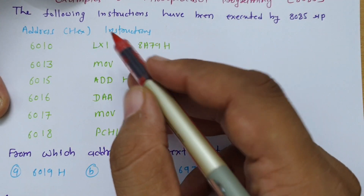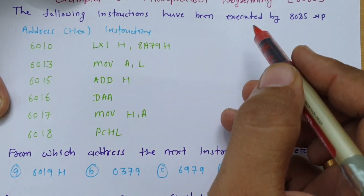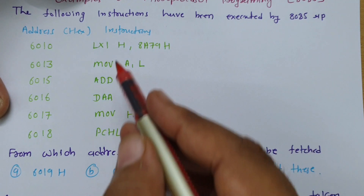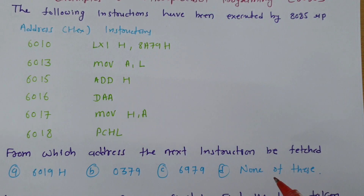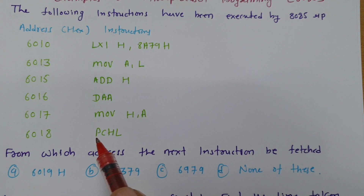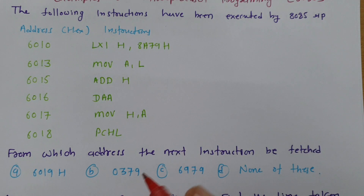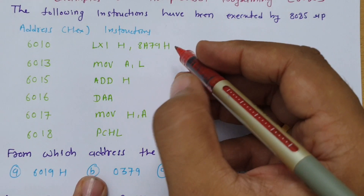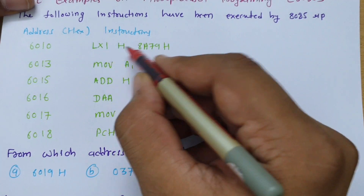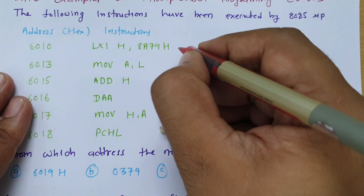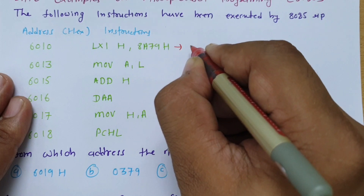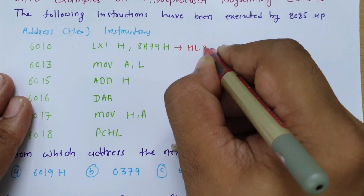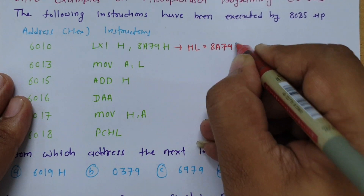We have a question: the following instructions have been executed by 8085 — from which address will the next instruction be fetched? We are dealing with the PCHL instruction and need to calculate what address comes next. Step by step: if we execute LXIH 8A79, then the HL pair gets loaded with 8A79.